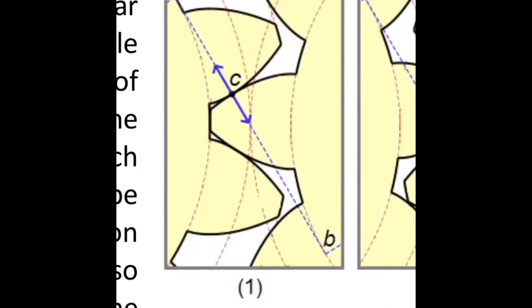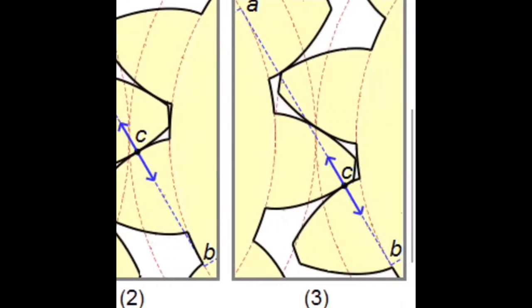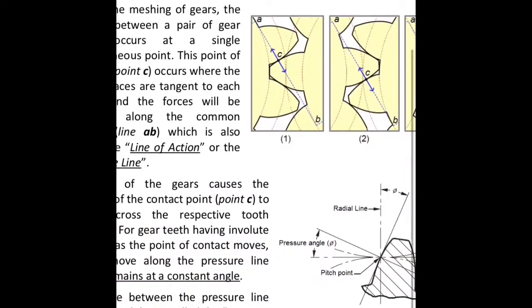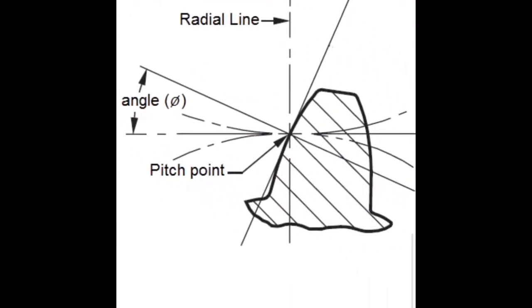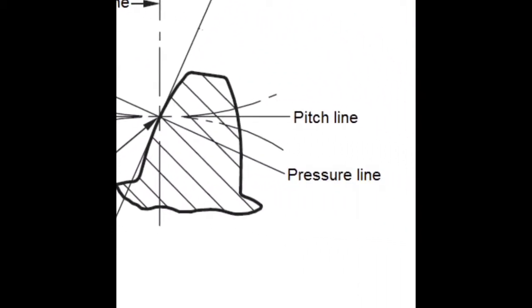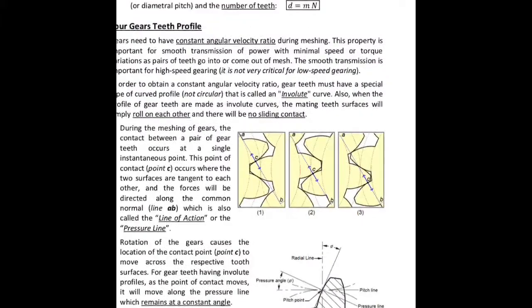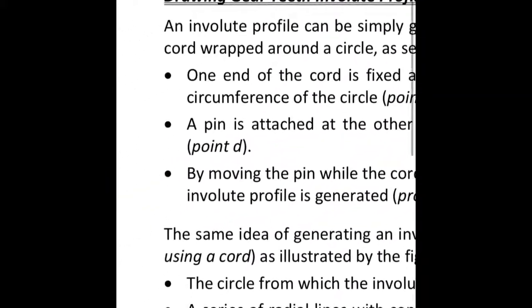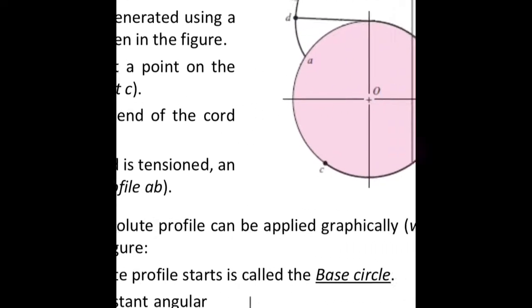Nomenclature: since spur gears are the simplest type, they will be used for illustration and to define the primary parameters of gears and their relations. The figure illustrates the terminology of spur gears. The pitch circle is the theoretical circle upon which all gear calculations are based, and its diameter is called the pitch diameter.